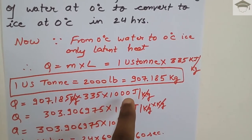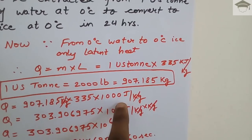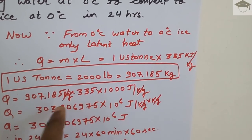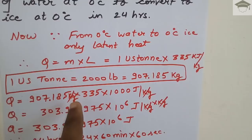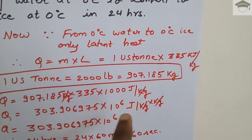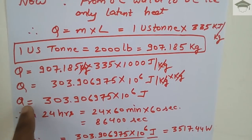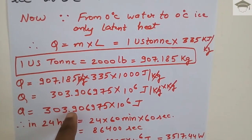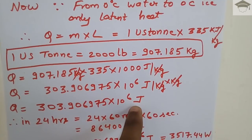We multiply 907.185 kg × 335 × 1000 joule per kg — the 1000 converts kilojoules into joules, and the kg units cancel. Q comes out to be 303.906975 × 10⁶ joules.